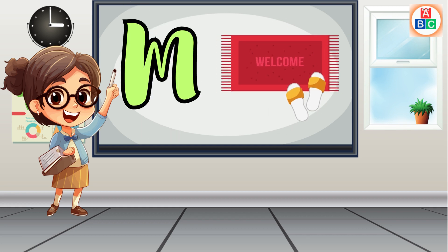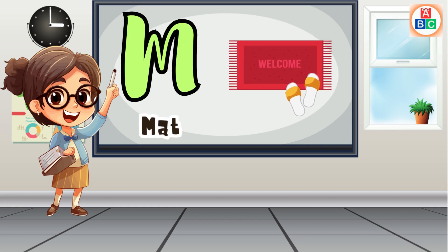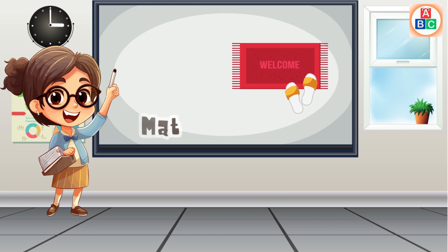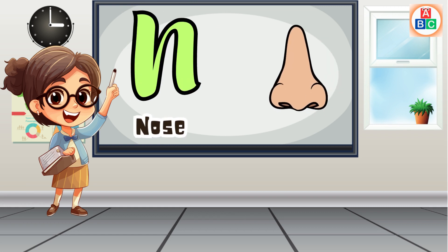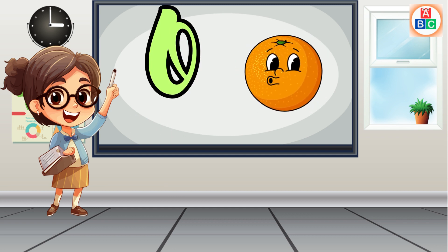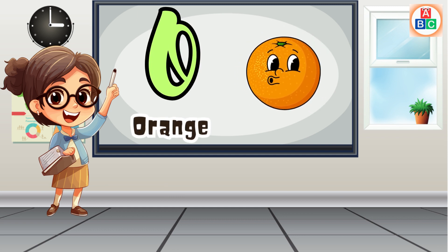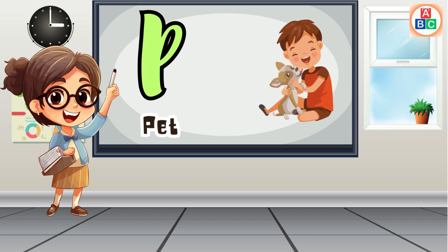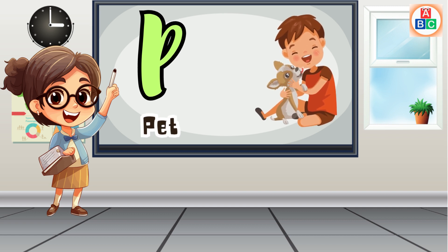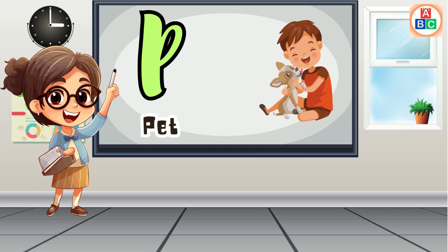M is for mat, m-m-mat. N is for net, n-n-net. O is for orange, o-o-orange. P is for pet, p-p-pet.